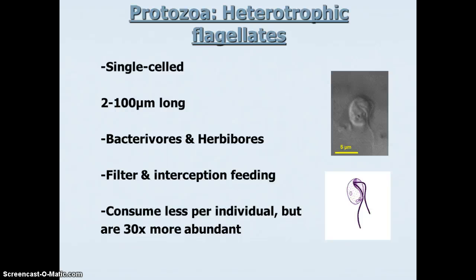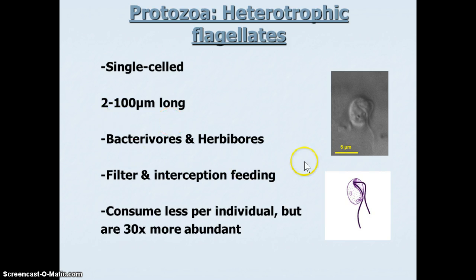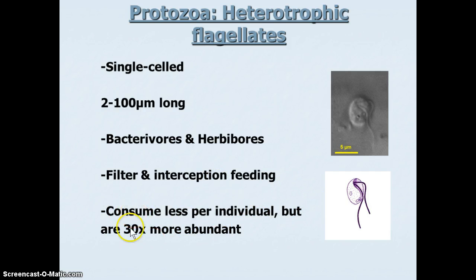The next important group of consuming protozoa is the heterotrophic flagellates — I say heterotrophic because, remember, we learned about dinoflagellates, which are primary producers. They're a similar group: single-celled, 2 to 100 microns, eating both bacteria and phytoplankton. They are more interception feeders or active predators — they go out, capture, and eat. They consume fewer bacteria than ciliates, but they're usually about 30 times more abundant, so they average out.